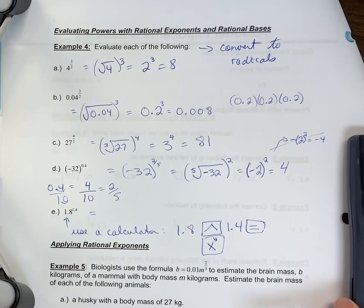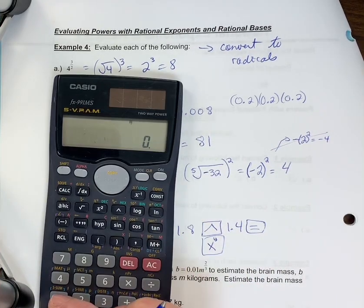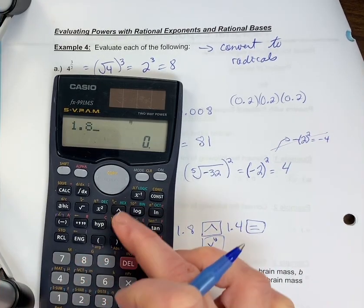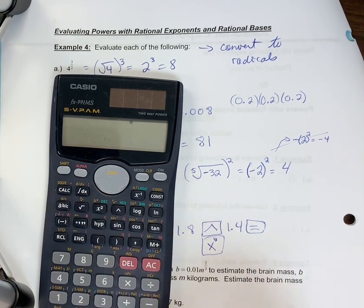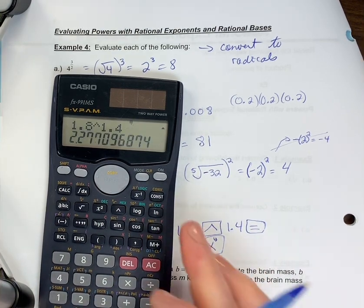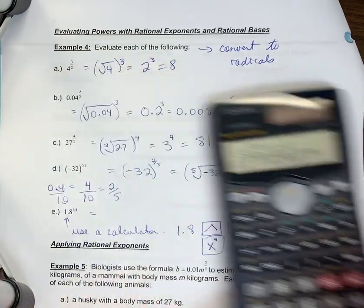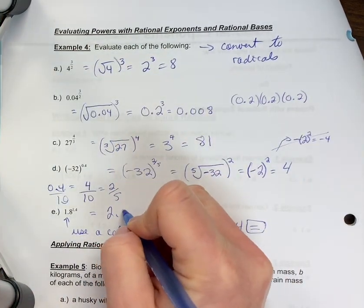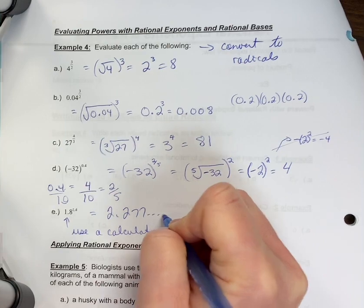Okay, so let's just see on my calculator. 1.8. I'm going to use that exponent button. 1.4. And the answer is 2.277. 2.277, and then it would continue on.